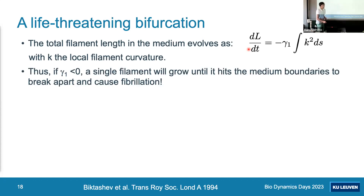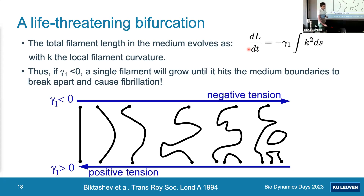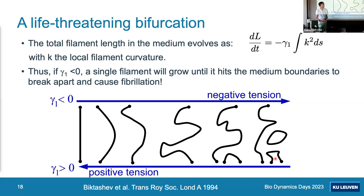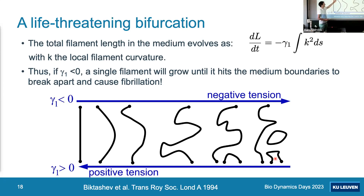Conversely, if γ₁ is negative (negative filament tension), the process reverses: an almost-straight filament becomes increasingly irregular and can produce multiple filaments. It is still a hypothesis, but this may be a mechanism for sudden cardiac death or sudden fibrillation: a patient develops one rotor wrapping around a line, and if their heart has negative filament tension, this quickly multiplies into fibrillation. An open question remains whether drugs could be found that act on filament tension, converting sudden fibrillation into the more benign tachycardia first.